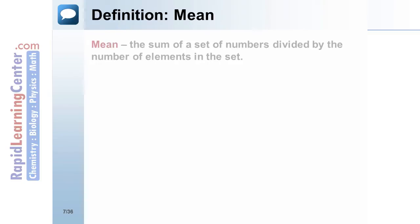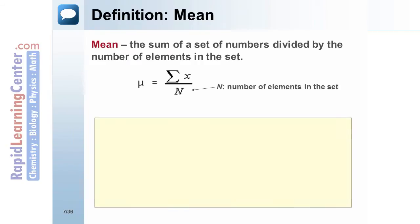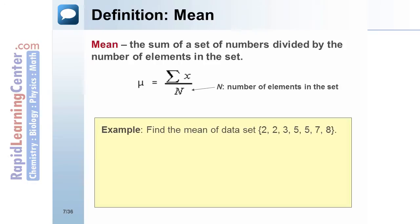Definition: Mean. The mean is the sum of a set of numbers divided by the number of elements in the set. Example: Find the mean of the data set 2, 2, 3, 5, 5, 7, 8. Add the elements of the set and divide by 7, the number of elements in the set. 32 divided by 7. The mean is approximately 4.57.